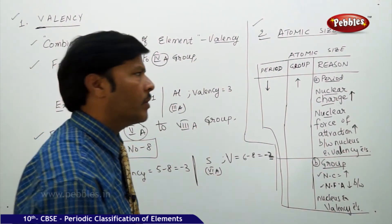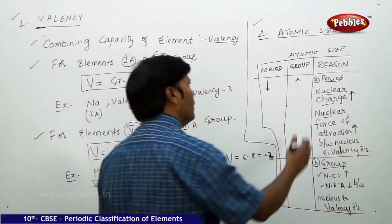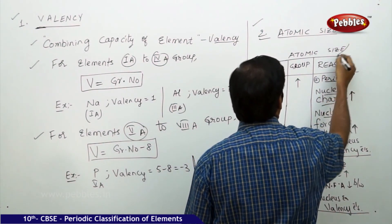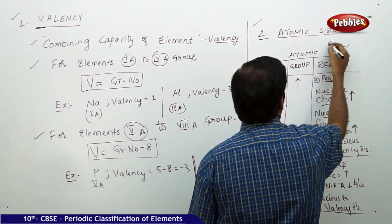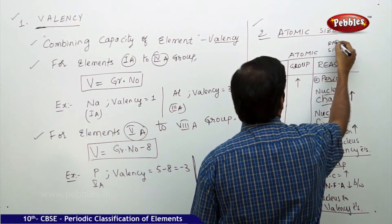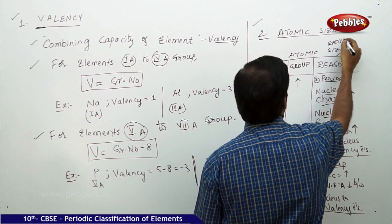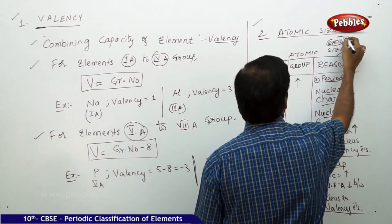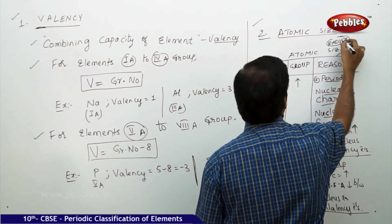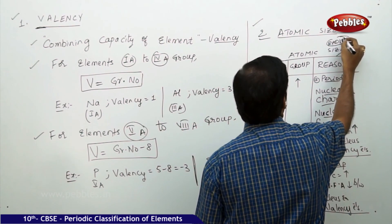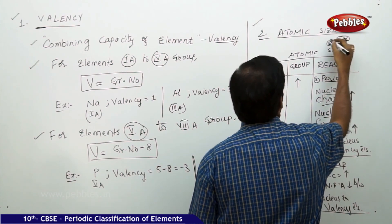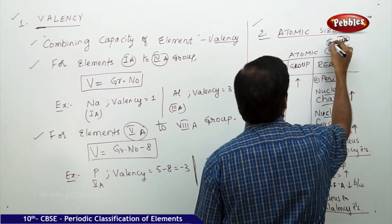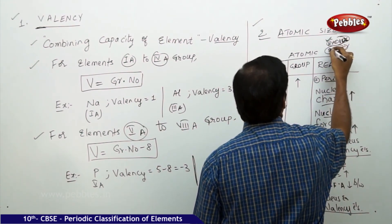Atomic size and atomic radius both mean one and the same thing.